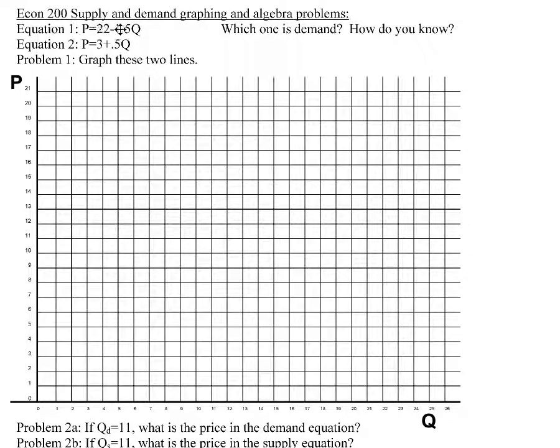So there's this inverse or negative relationship. Price up, quantity demanded goes down. Price goes down, quantity demanded increases. It's just a way of saying that people will buy more when the price is lower, or people want to buy more when the price is lower.